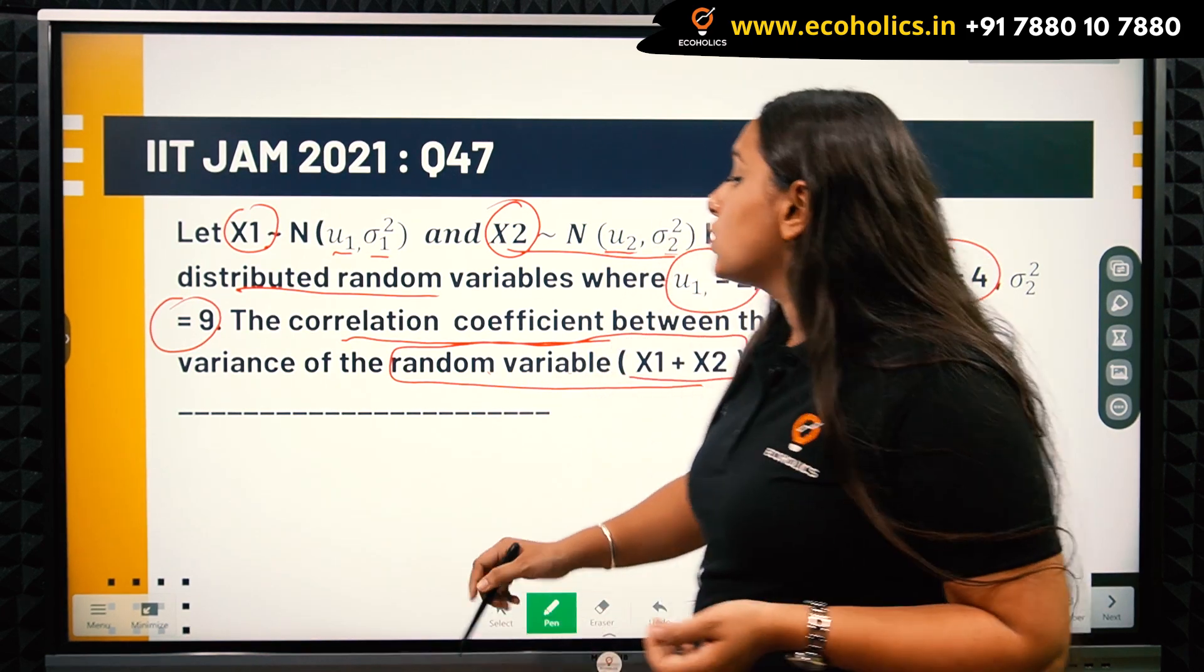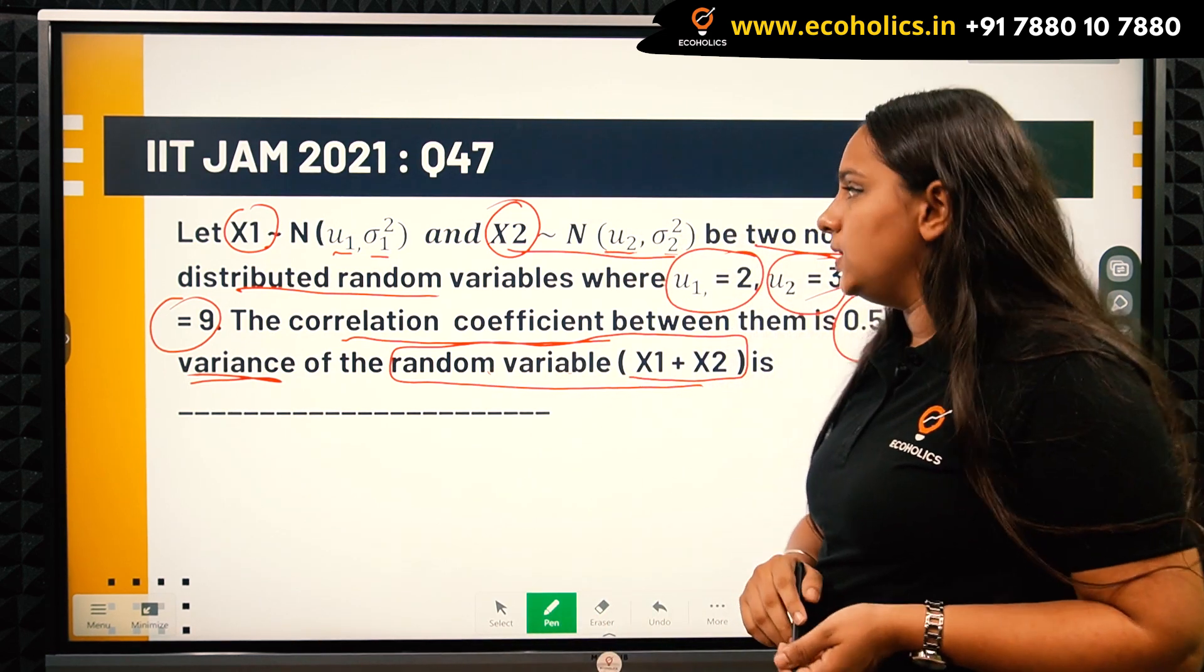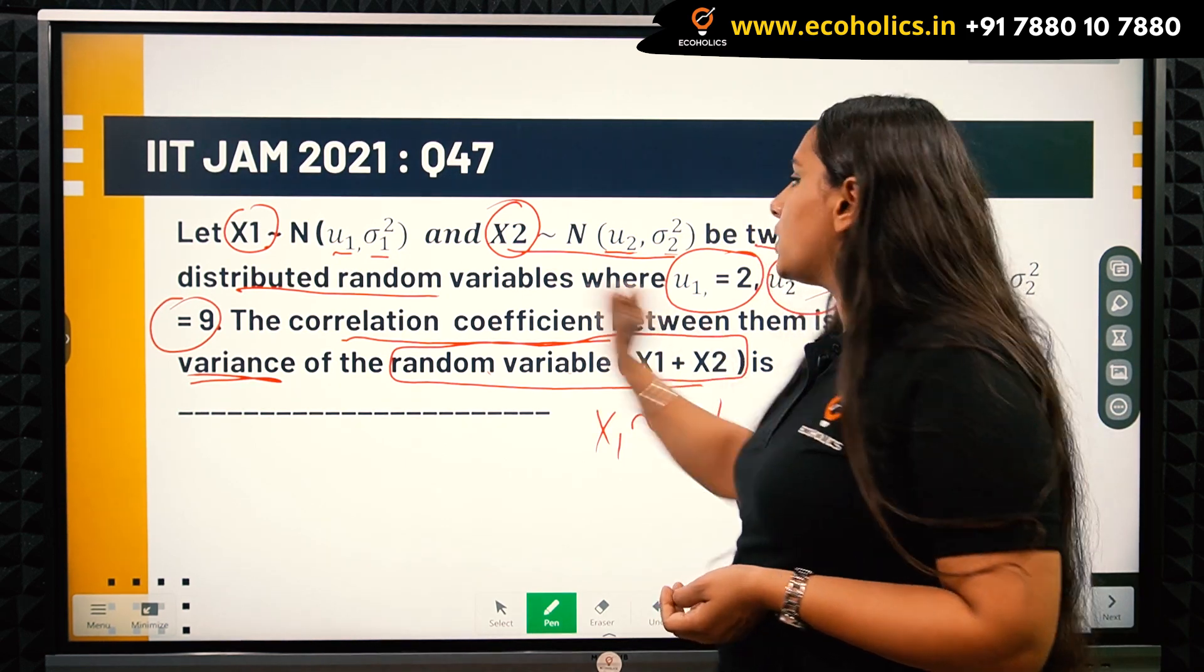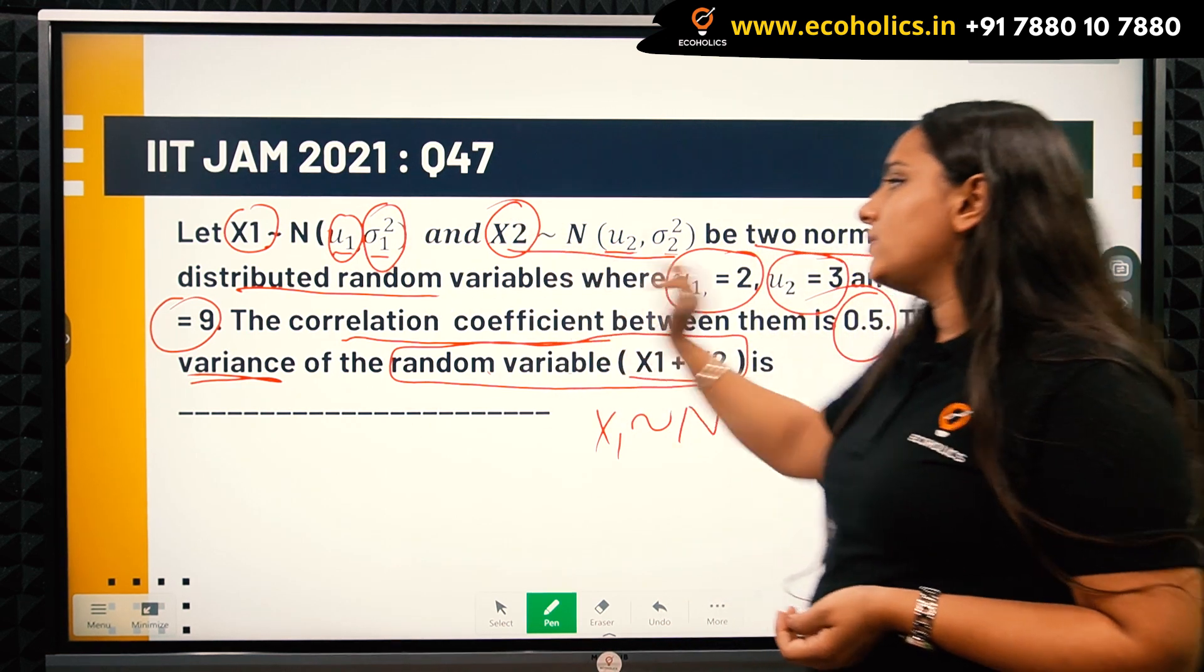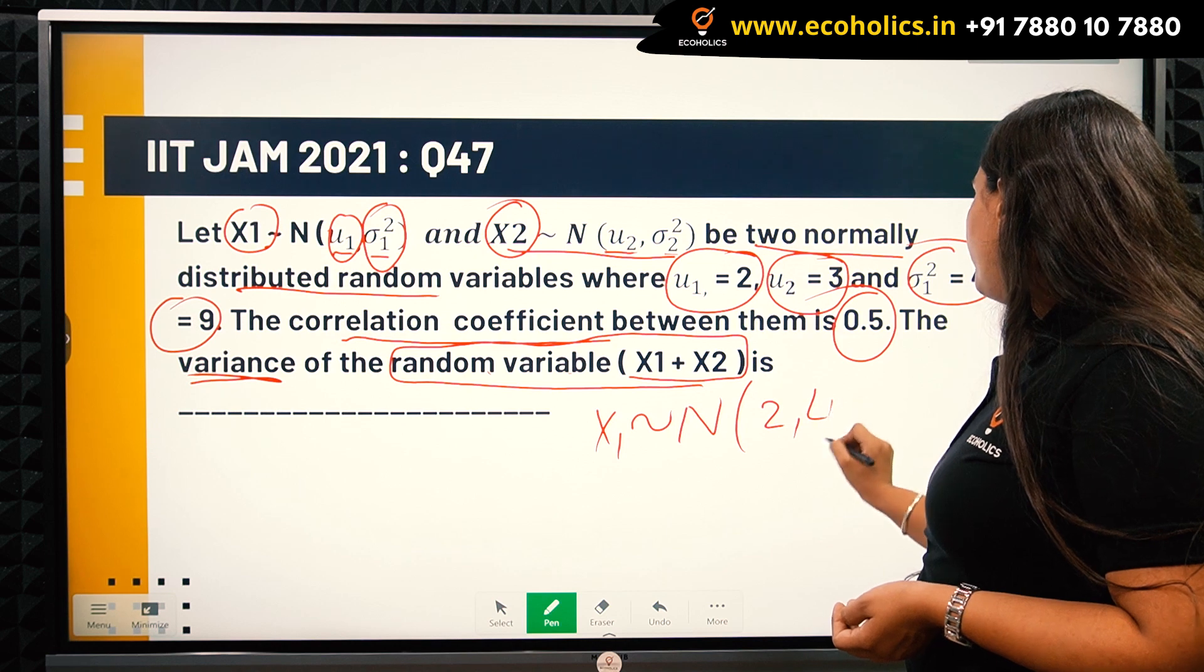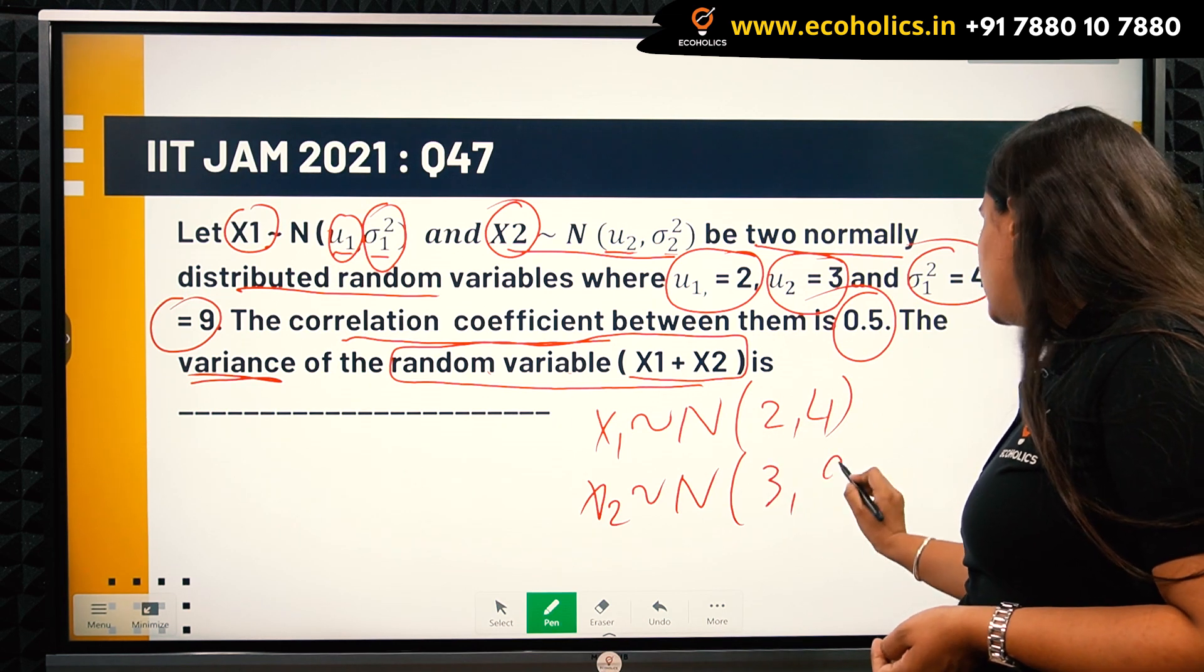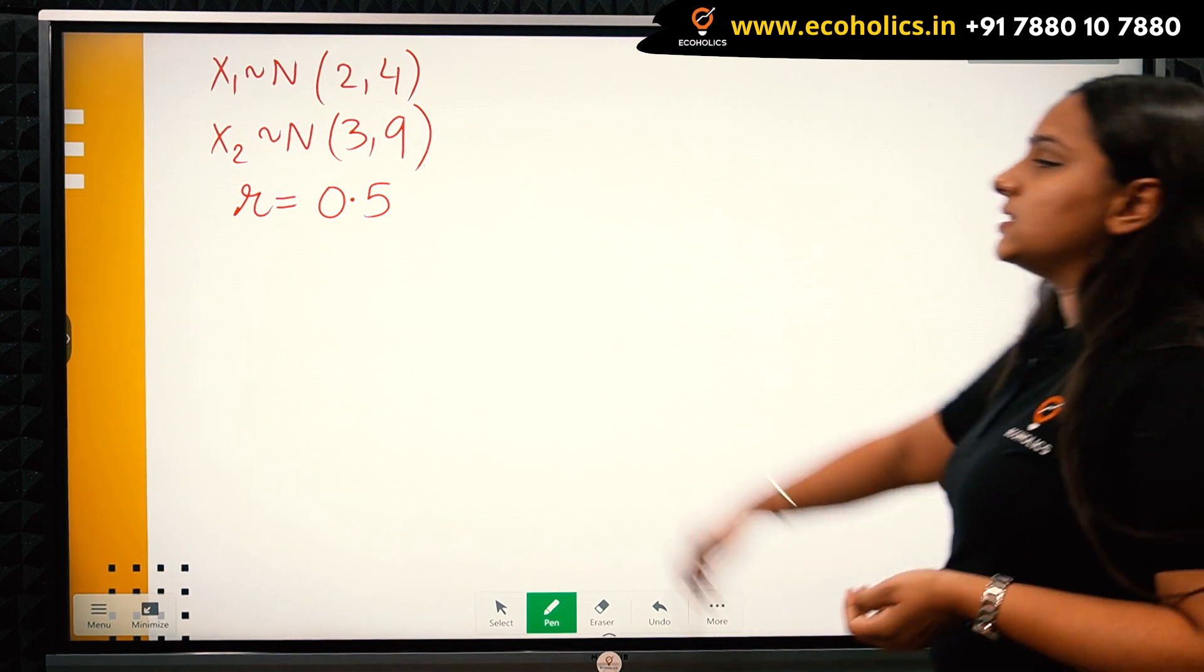I can write this: X1 follows normal distribution, and since we are given the values of mu1 and sigma1 squared, I will write them directly as N(2, 4). Similarly, X2 follows normal distribution with mean 3 and variance 9, so N(3, 9). This is the information the question is giving.